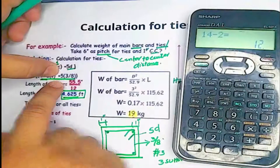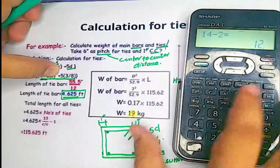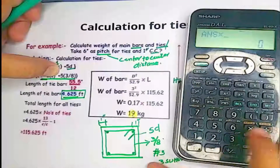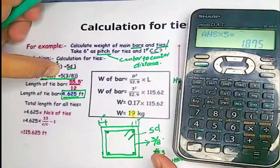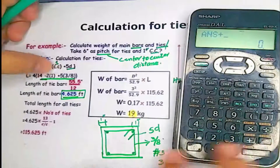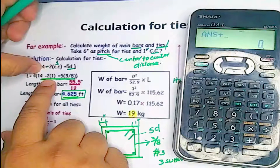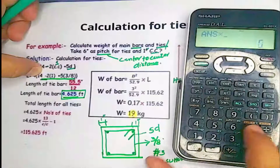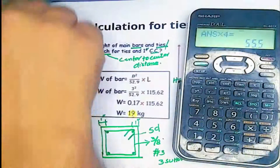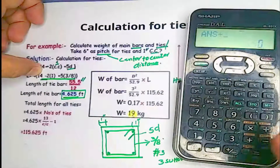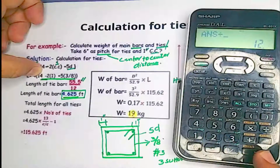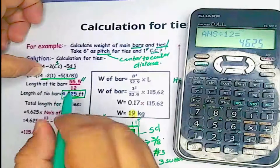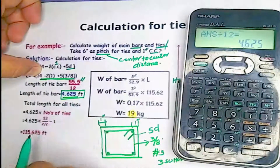Converting d: 3/8 = 0.375 inches, multiplied by 5 gives 1.875 inches per hook. Two hooks = 1.875 × 2 = 3.75 inches. Four sides: 4 × 12 = 48 inches. Total: 48 + 3.75 ≈ 55.5 inches. Dividing by 12 to convert to feet gives 4.625 feet, which is the length of one stirrup.